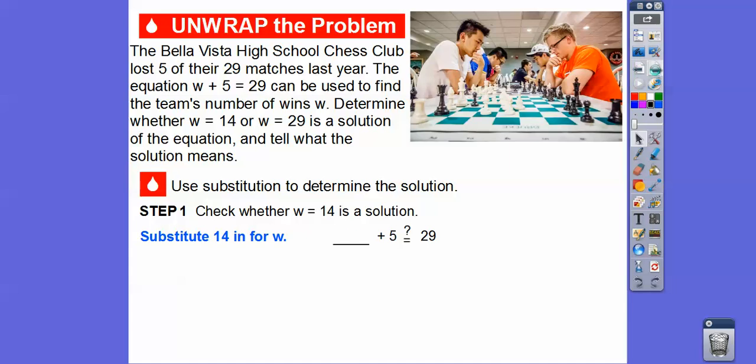So we'll substitute 14 in for w. So instead of w plus 5, it's now 14 plus 5. So is 14 plus 5 equal to 29? Well, when we add those together, 14 plus 5 equals 19.